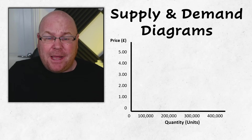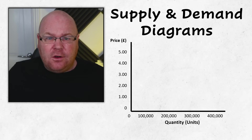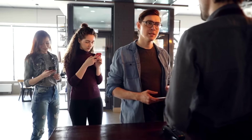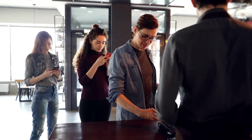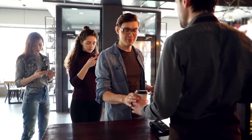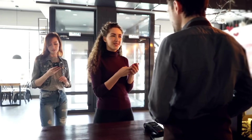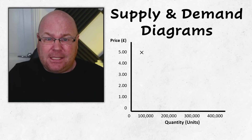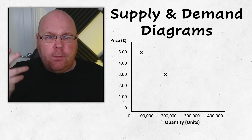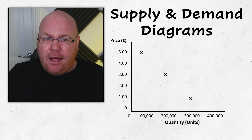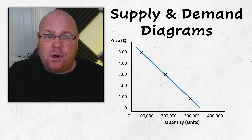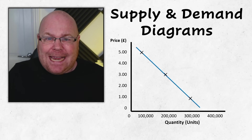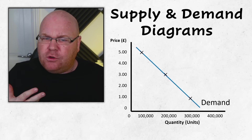Some exam boards require students to be able to draw supply and demand diagrams in their examination, so let's have a look at how that works, starting with the demand curve. The law of demand states that the higher the price for a good, the fewer consumers there will be that will be willing to purchase it. When price is quite high relatively few consumers are prepared to purchase it, and at lower price points more consumers might be willing to part with their cash and purchase that good, which creates a downward sloping demand curve.